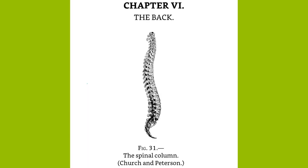Chapter 6: The Back. The Spine. The trunk may be roughly divided into the back, the chest or thorax, the abdomen, and the pelvis. By the back is denoted the spinal column with its muscles, blood vessels, etc., and the spinal cord already described.